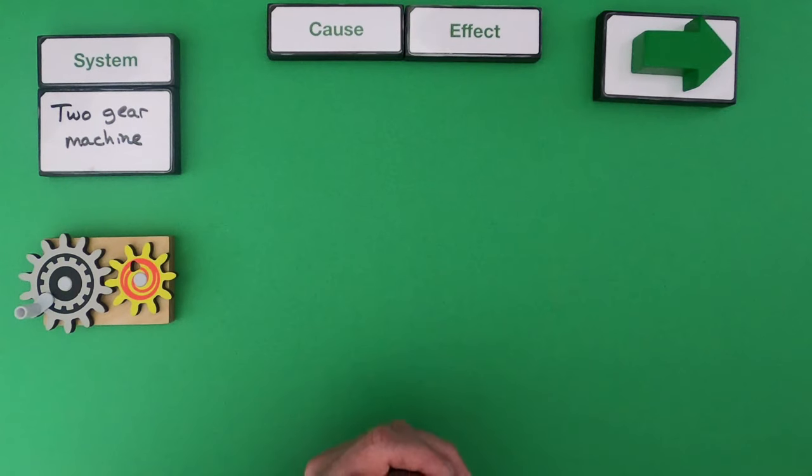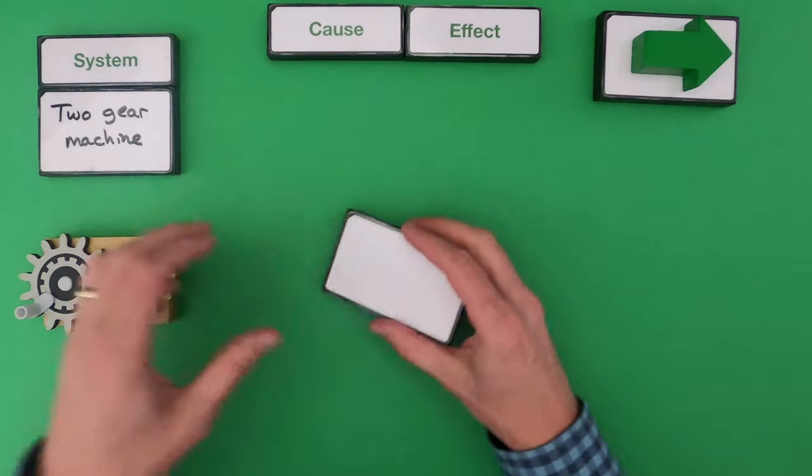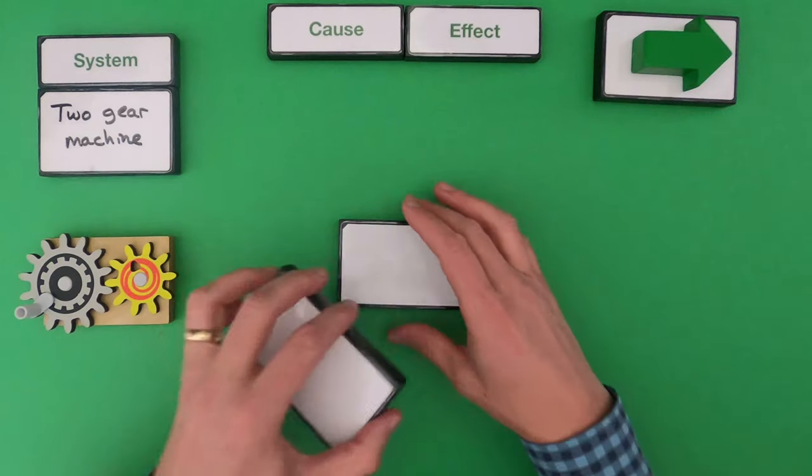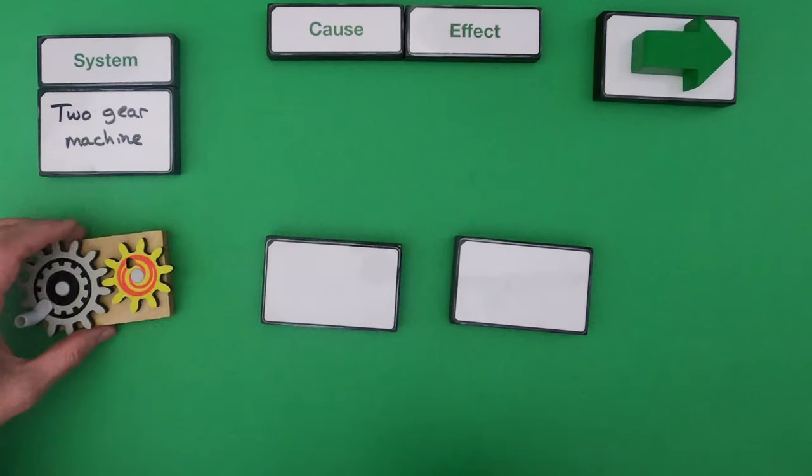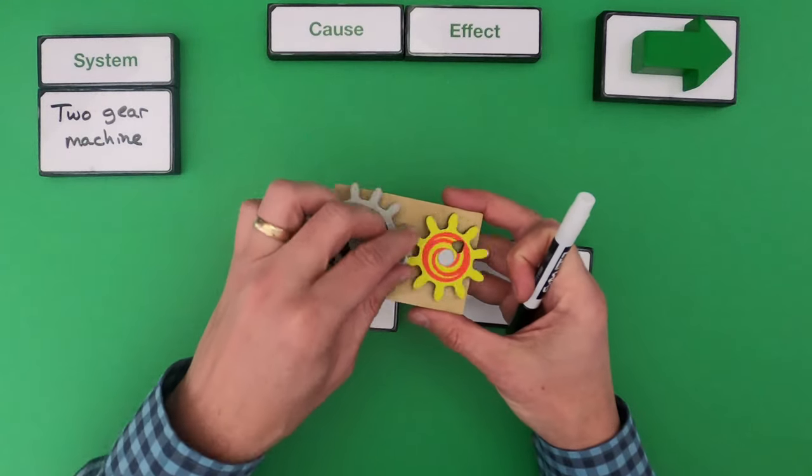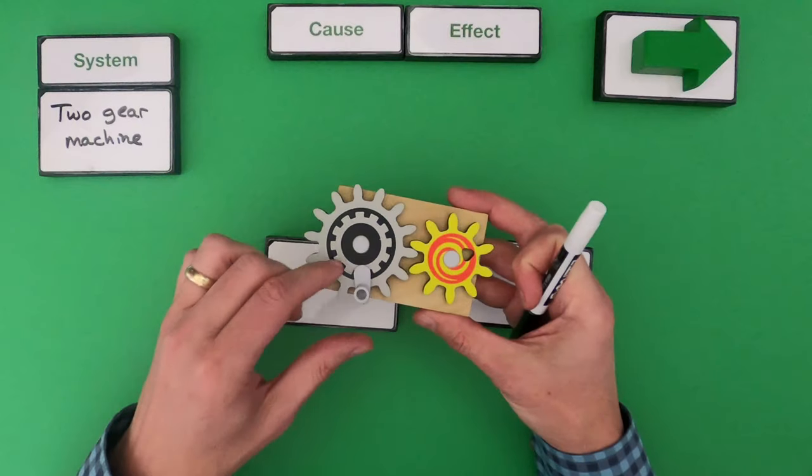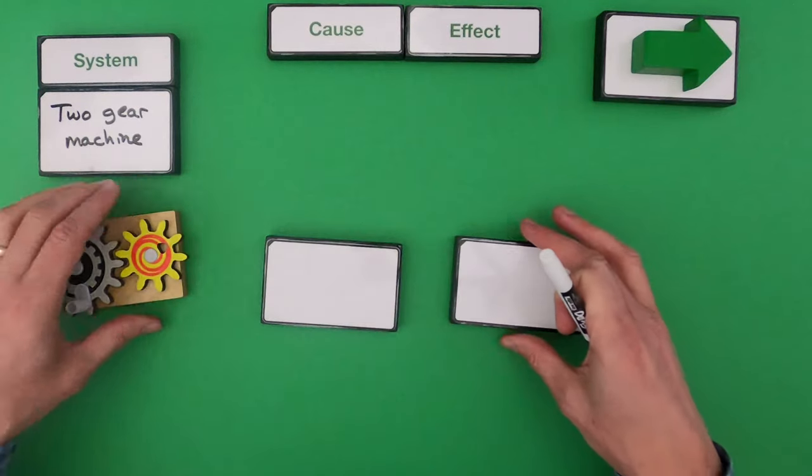And now I have to try to figure out what's going to be the cause and what's going to be the effect. Whenever I'm doing a system and trying to identify cause and the effect, the first thing I try to do is write down all the things that I see taking place. What are the objects and what are the events taking place? So I see really these two gears moving.